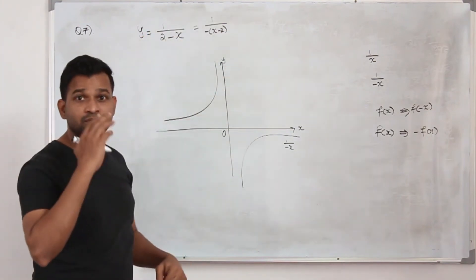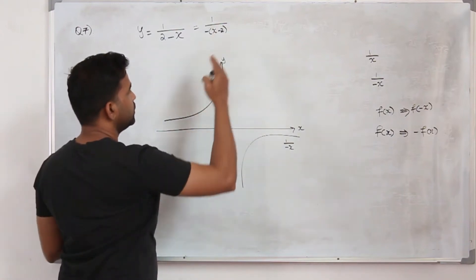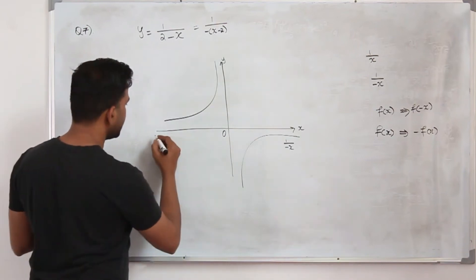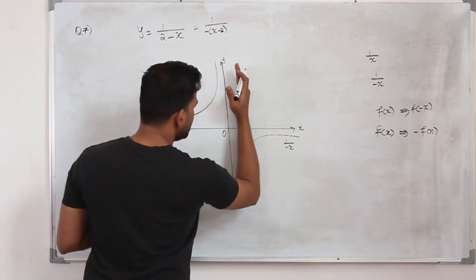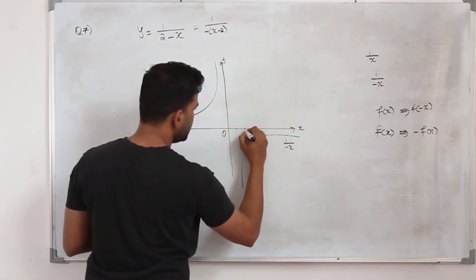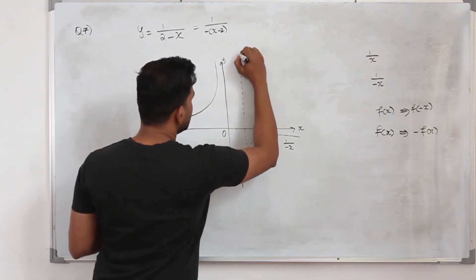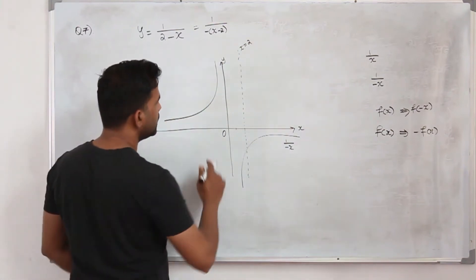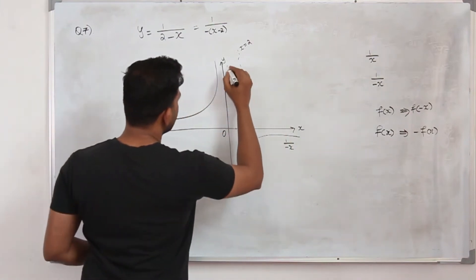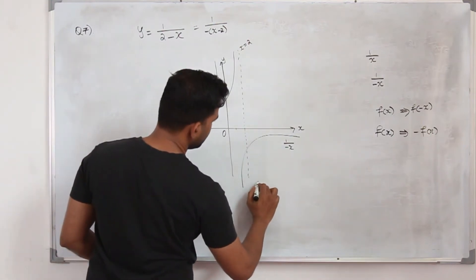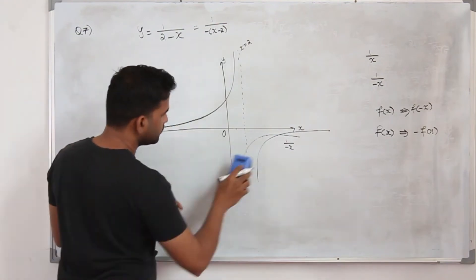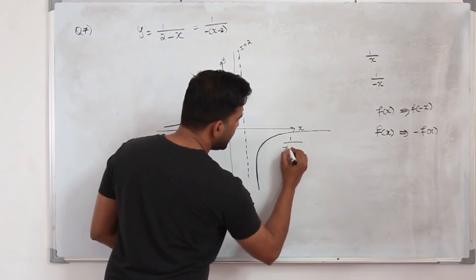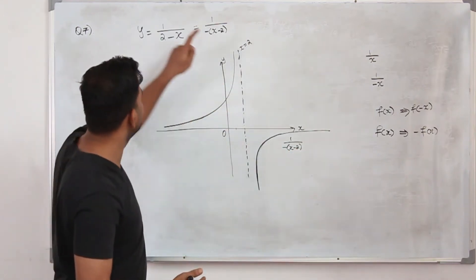Now we replace x by x minus 2, so the graph translates 2 units to the right. The horizontal asymptote remains the x-axis (y = 0), and the vertical asymptote moves 2 units right to x = 2. Moving the graph 2 units right gives the new graph, which is 1 upon minus of (x minus 2), or in other words, 1 upon 2 minus x.